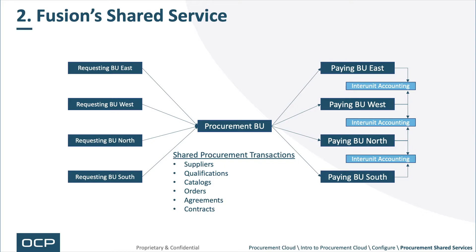Next, Fusion's Shared Service. Fusion has specific functionality to create what I call operational business units separate from accounting business units. Those business units share the processing and act as a client or service. In this case, the procurement BU acts as a client or service to the requesting BUs. In the model you can see on the left, requesting BU east, west, north, and south probably used to have their own procuring function.